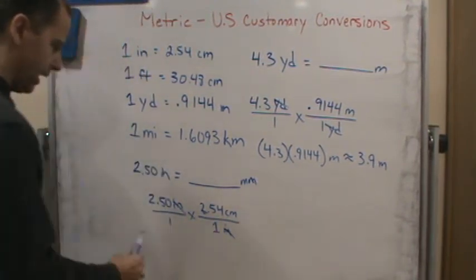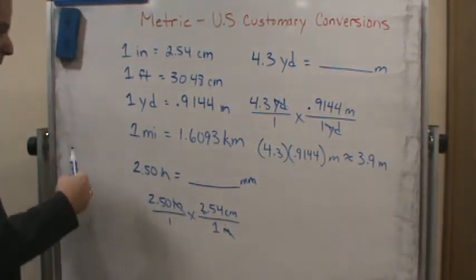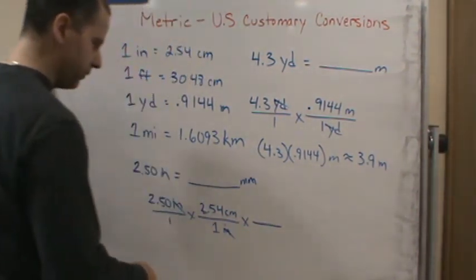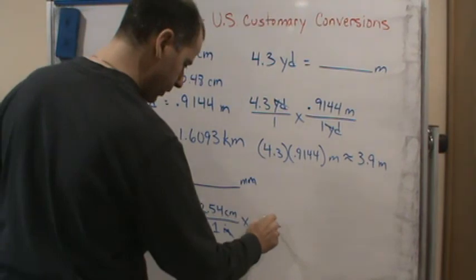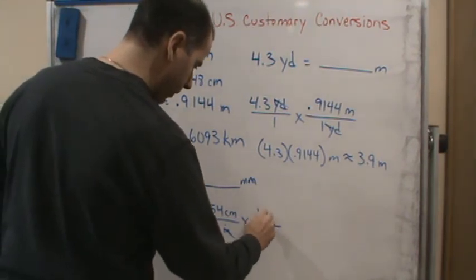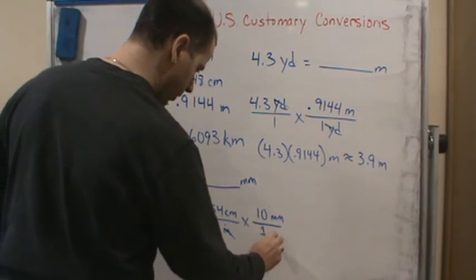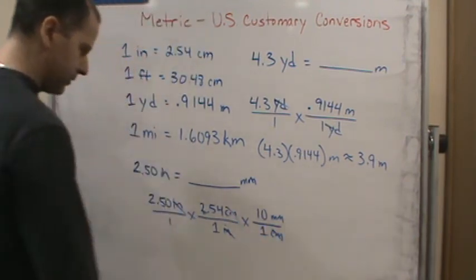So the inches cancel, and now we've got centimeters, but we want millimeters. So now we add another unit ratio that's going to help us convert from centimeters to millimeters, which means there are 10 millimeters for every centimeter.